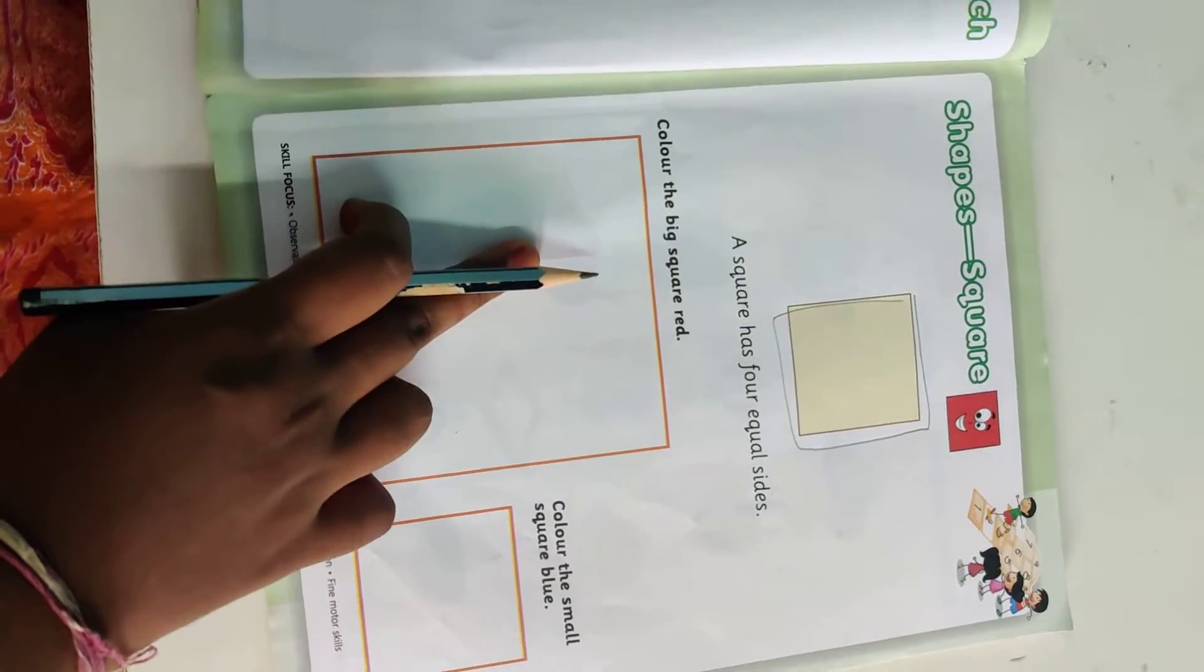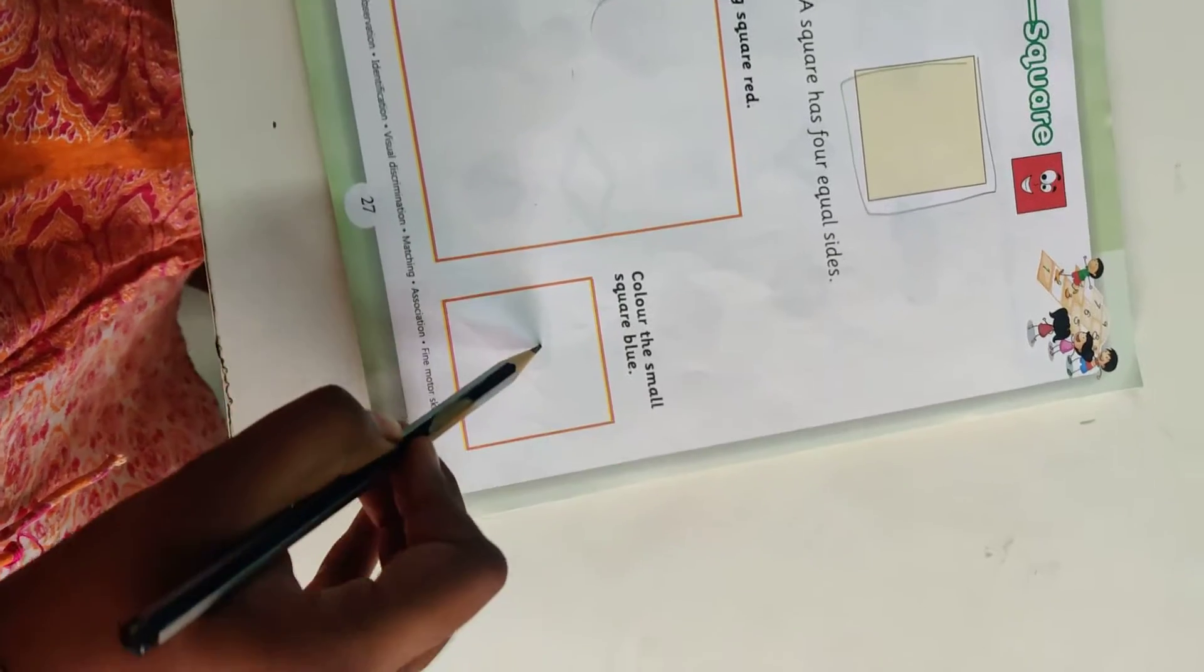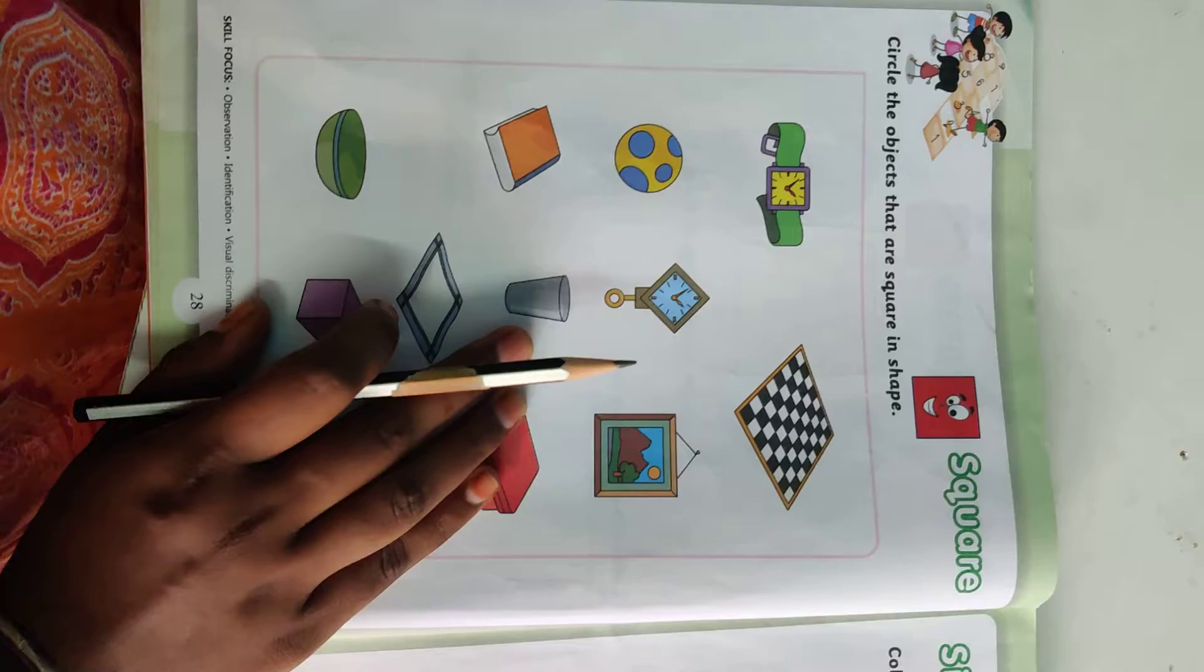So, color the big square. This is the big square. Red color and this is blue color. You have to color the square.